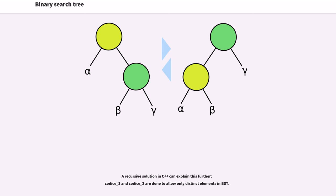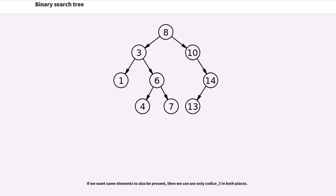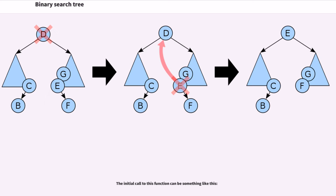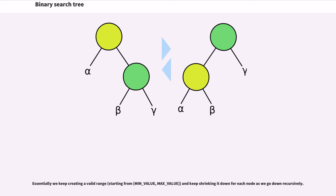So the condition we need to check at each node is: a recursive solution in C++ can explain this further. Codice_1 and codice_2 are done to allow only distinct elements in BST. If we want same elements to also be present, then we can use only codice_3 in both places. The initial call to this function can be something like this. Essentially we keep creating a valid range, starting from min_value, max_value, and keep shrinking it down for each node as we go down recursively.